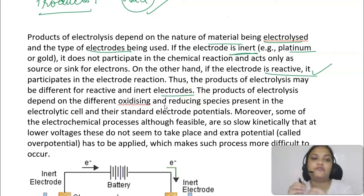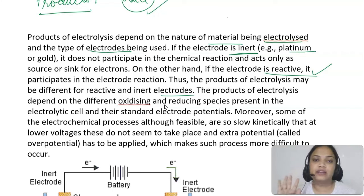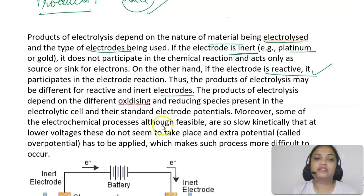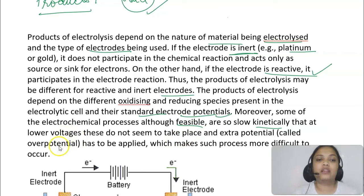The products also depend on the oxidizing and reducing species and their electrode potentials. If there is more than one cation, we determine which one gets reduced using the standard electrode potential. Also, some electrochemical processes are kinetically very slow at low voltages and cannot take place, so we need to apply some extra potential called over potential, which makes these processes difficult to occur.